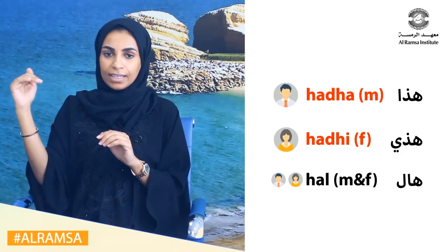So now you have three options: hatha, hathi, and hal. For example, if you want to say 'this is a boy' you say hatha walad — that's masculine. For 'this is a girl' you say hathi bent. But if you don't want to use hatha or hathi, you can use hal for both masculine and feminine.